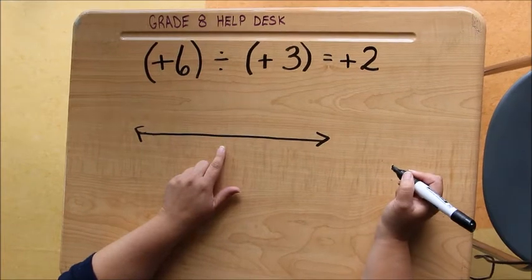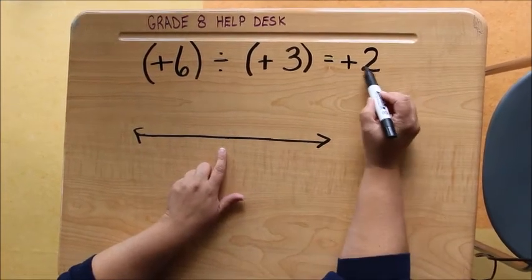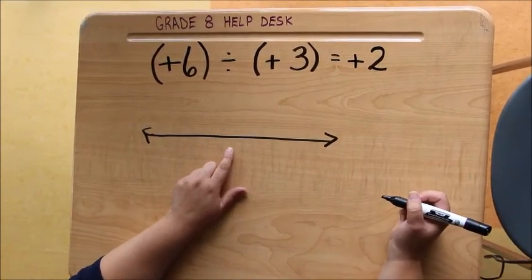So now we're going to use a number line to see if we can get our number line to model and show that positive 2 is the correct answer.